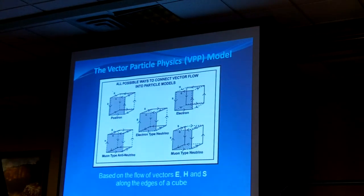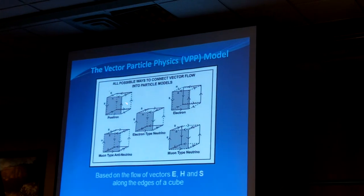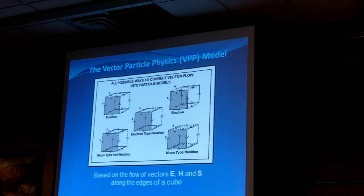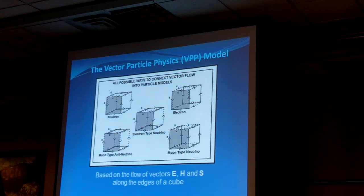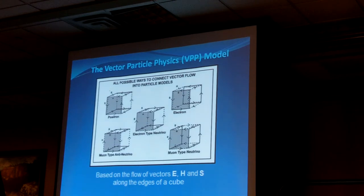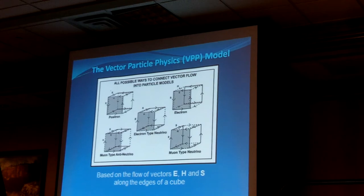It looks like the H field is going around the surface of the front face, the E field around the top face, and the S field around the side. He said these are the only five ways it can work. I said, well, let's find out what the rules are and then see if there really are only five ways. That was really the purpose of this paper — to see if that's true. I did confirm that there are only five ways.